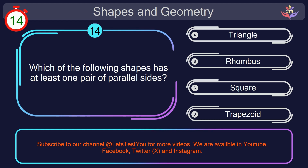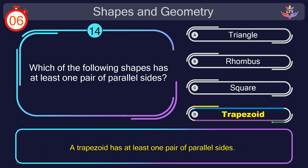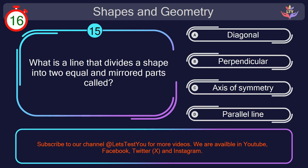Question number 14. Which of the following shapes has at least 1 pair of parallel sides? Your countdown started. 1, here we go. The correct answer is option D. Trapezoid. A trapezoid has at least 1 pair of parallel sides.